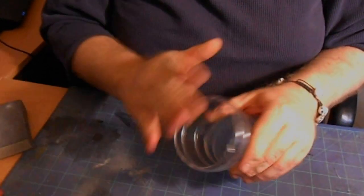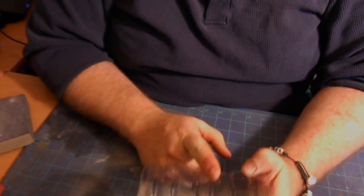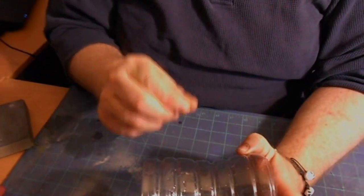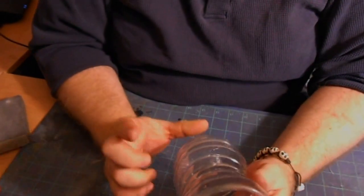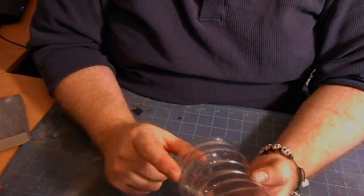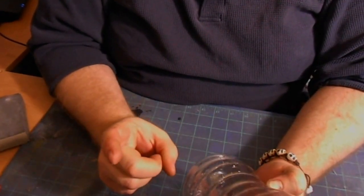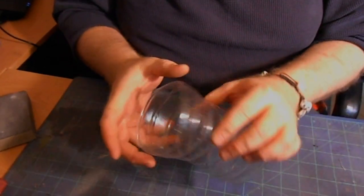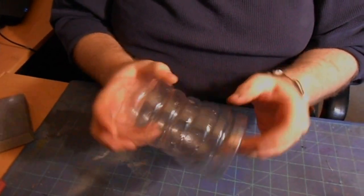Once you've got that sanded down, I suggest taking and cleaning this with a small amount of dish soap, one or two drops of dish soap and hot water. What happens when they make this is the molds are coated with mold release, and that mold release might still be here and it could affect your paint job.